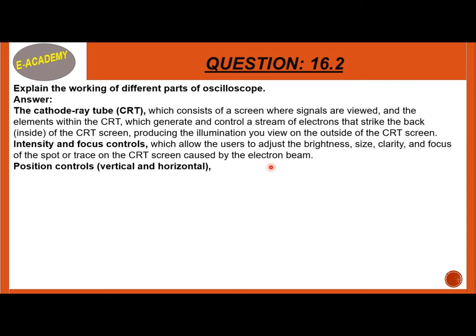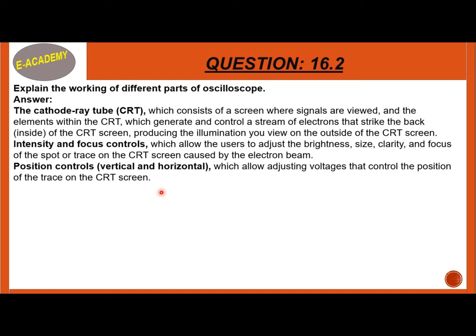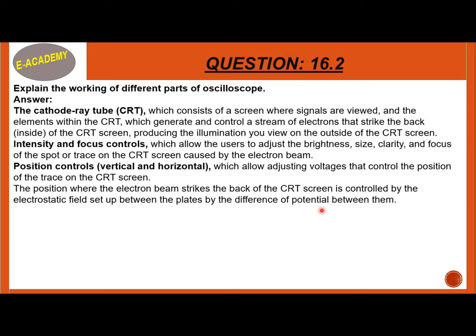Next is the position control — vertical and horizontal — which allows adjusting voltages that control the position of the trace on the CRT screen. The position where the electron beam strikes the back of the CRT screen is controlled by the electrostatic field set up between the plates by the difference of potential between them.